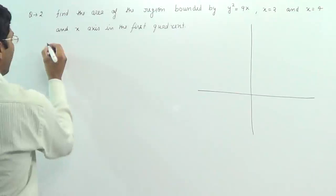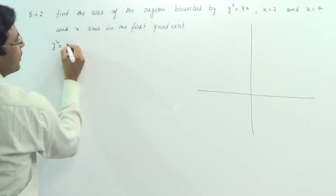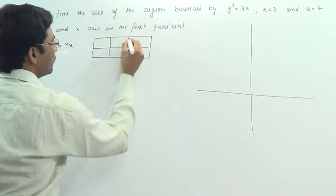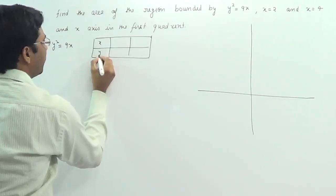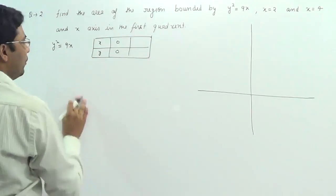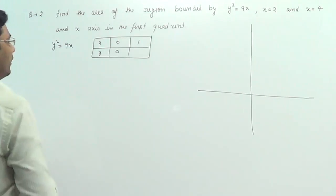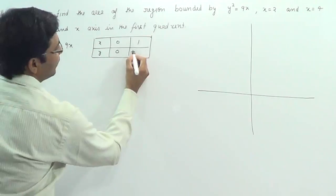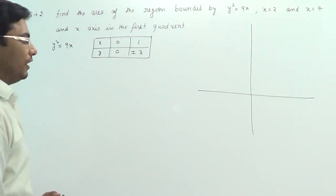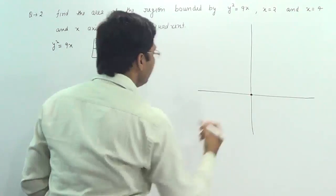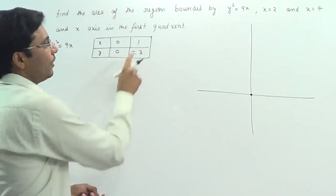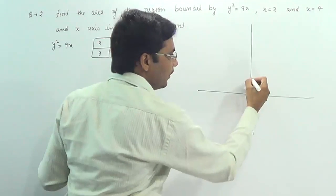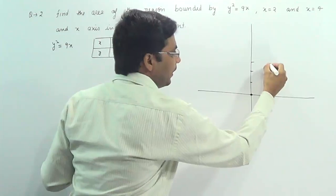The equation is y² = 9x. Plugging x = 0, we get y = 0. Plugging x = 1, we get 9, and the root of 9 is plus or minus 3. So these are the points: the first point lies on the origin. When x = 1, y = +3 and -3. So this is x = 1, and y can be 3 and here minus 3.